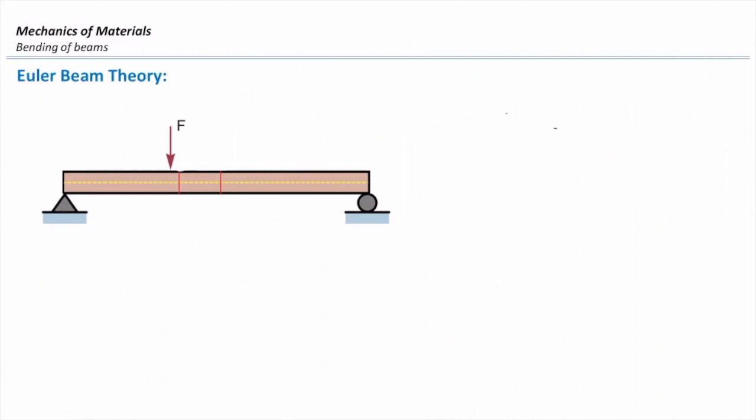Today we talk about bending elements. Bending elements are basically elements which are subjected to forces perpendicular to their axis, to their longitudinal direction. This force causes two effects in the elements: first is bending moment and the second one is shear force. We study these two effects separately. In our lecture today, we focus on the bending moment and its effect with respect to the stress. So we want to determine how much is the stress caused by the moment acting in a beam.